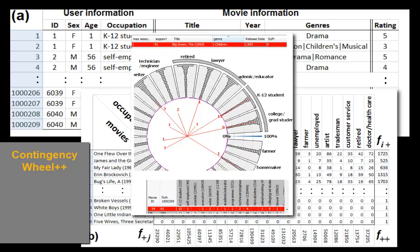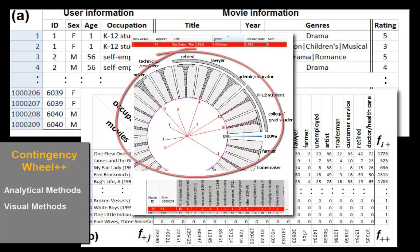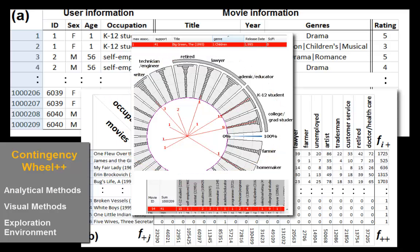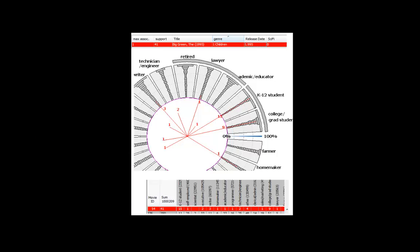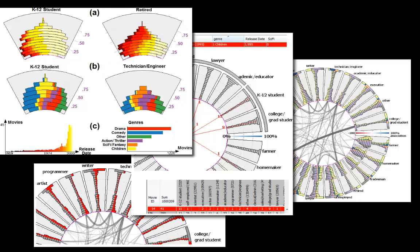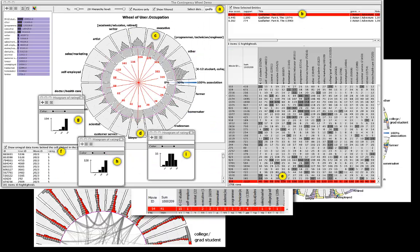It comprises analytical methods which extract existing associations, visualization methods which visualize these associations, and an exploration environment that provides easy on-demand access to all information in the dataset. This video illustrates the visual metaphors of Contingency Wheel++ and elaborates on the interactions provided via its exploration environment.